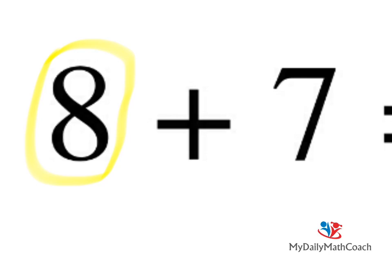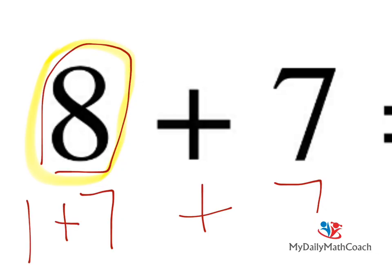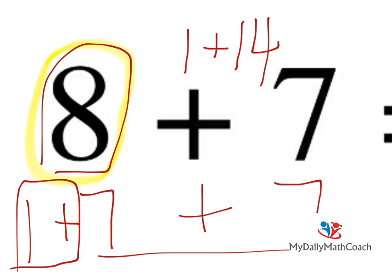Well, if you thought that the doubles fact inside of eight plus seven was seven plus seven, then you are right. Seven plus seven. And then since this is eight, we can say plus one. So seven plus seven is fourteen. And fourteen plus one gives you your answer, which is fifteen.